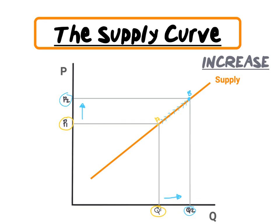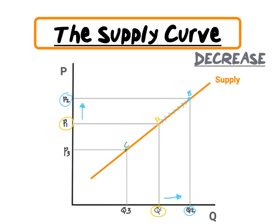This is illustrated as a movement along our supply curve. For the next example, suppose that we are going to decrease the price of the product from P1 to P3. This will be illustrated as a movement along our supply curve from point A to point C, where our price decreases from P1 to P3 and our quantity also decreases from Q1 to Q3.